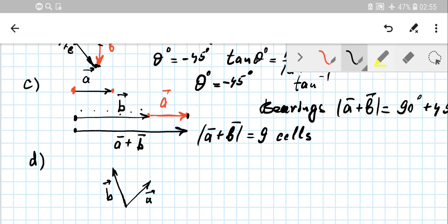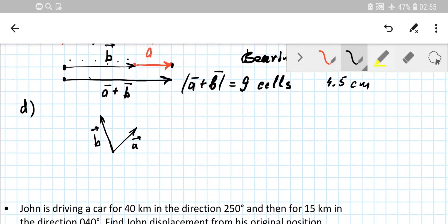If you want to convert to centimeters, each cell is 0.5 cm, so it's going to be 4.5 centimeters if you want to calculate in those units.